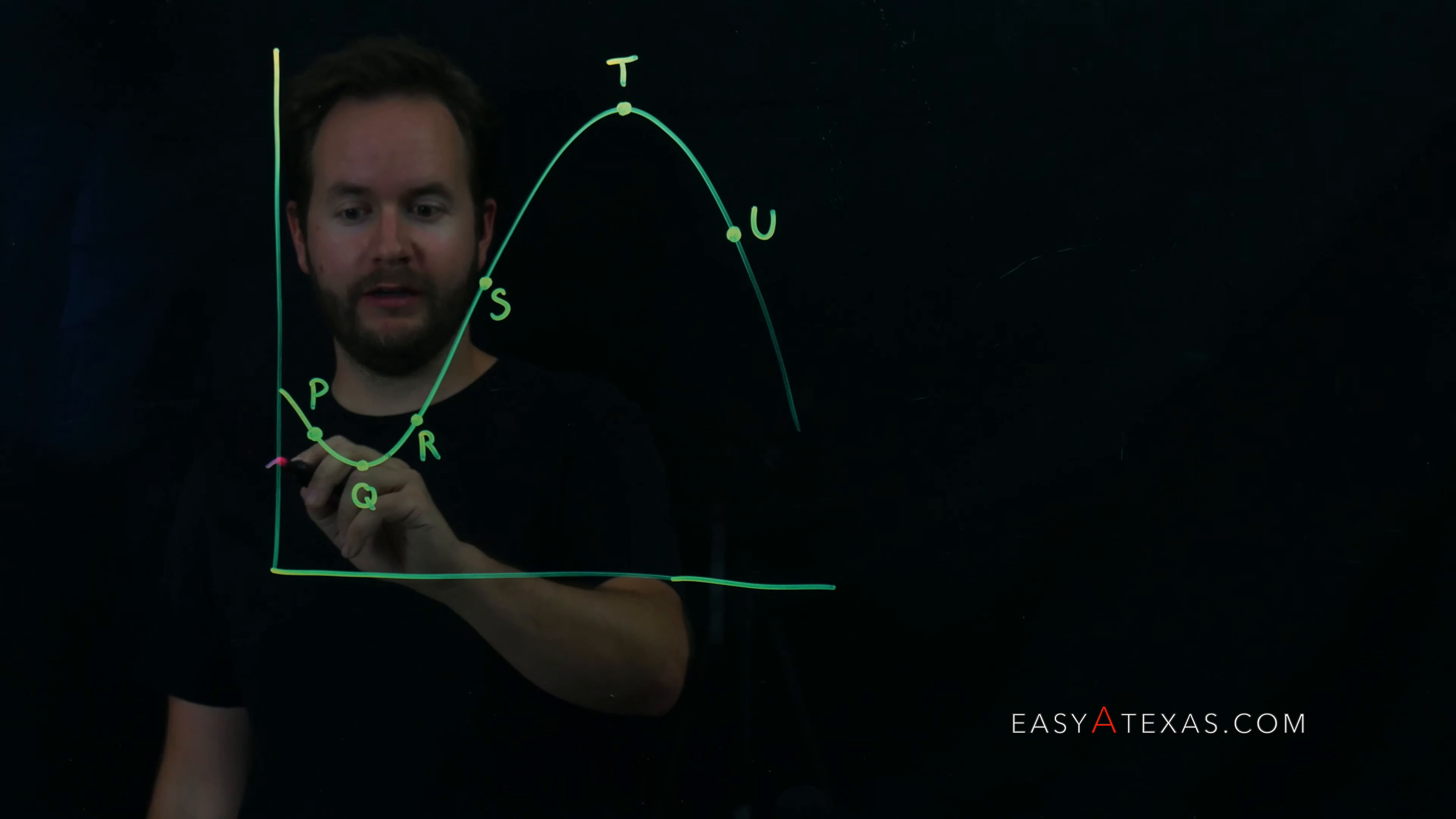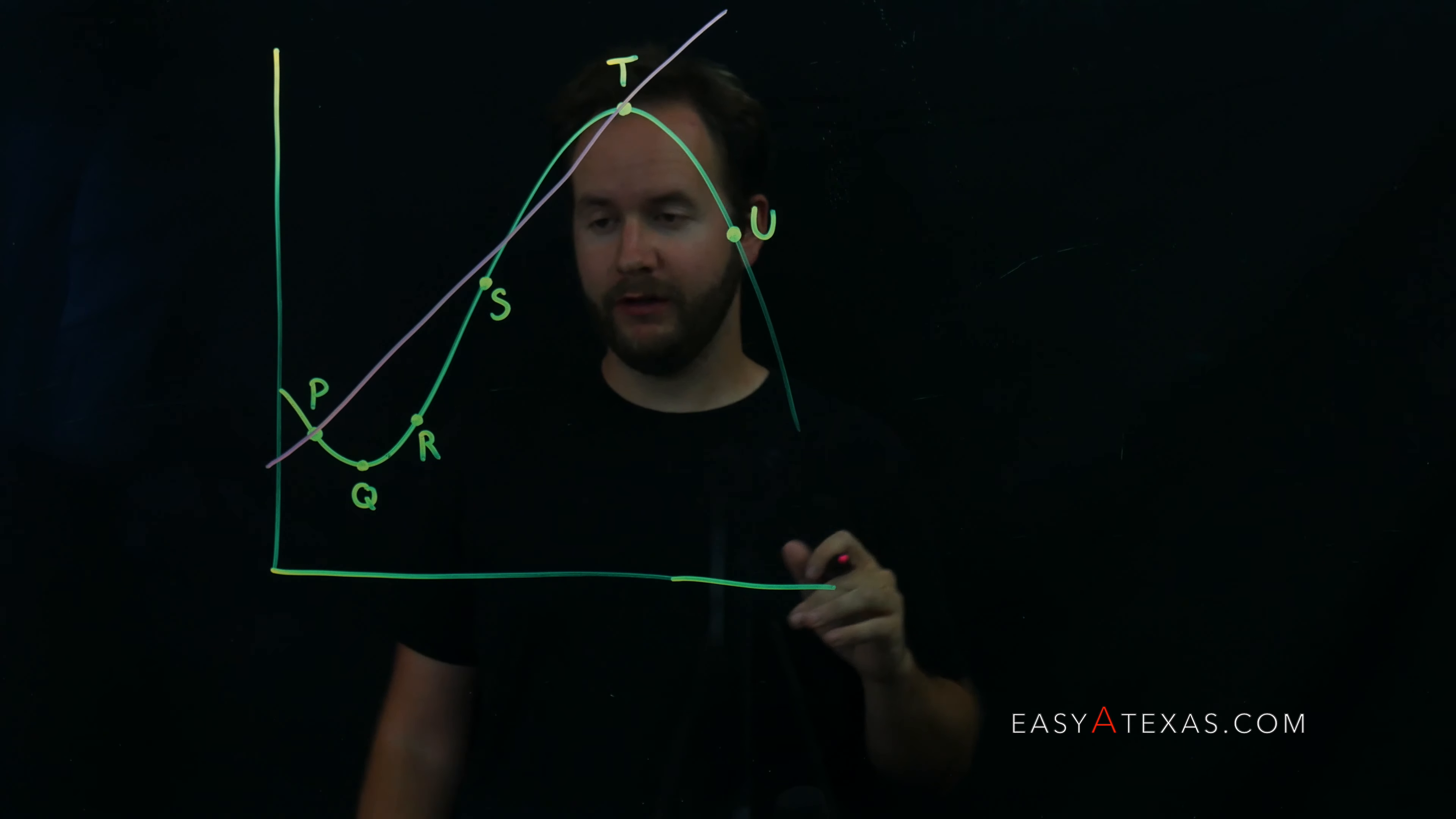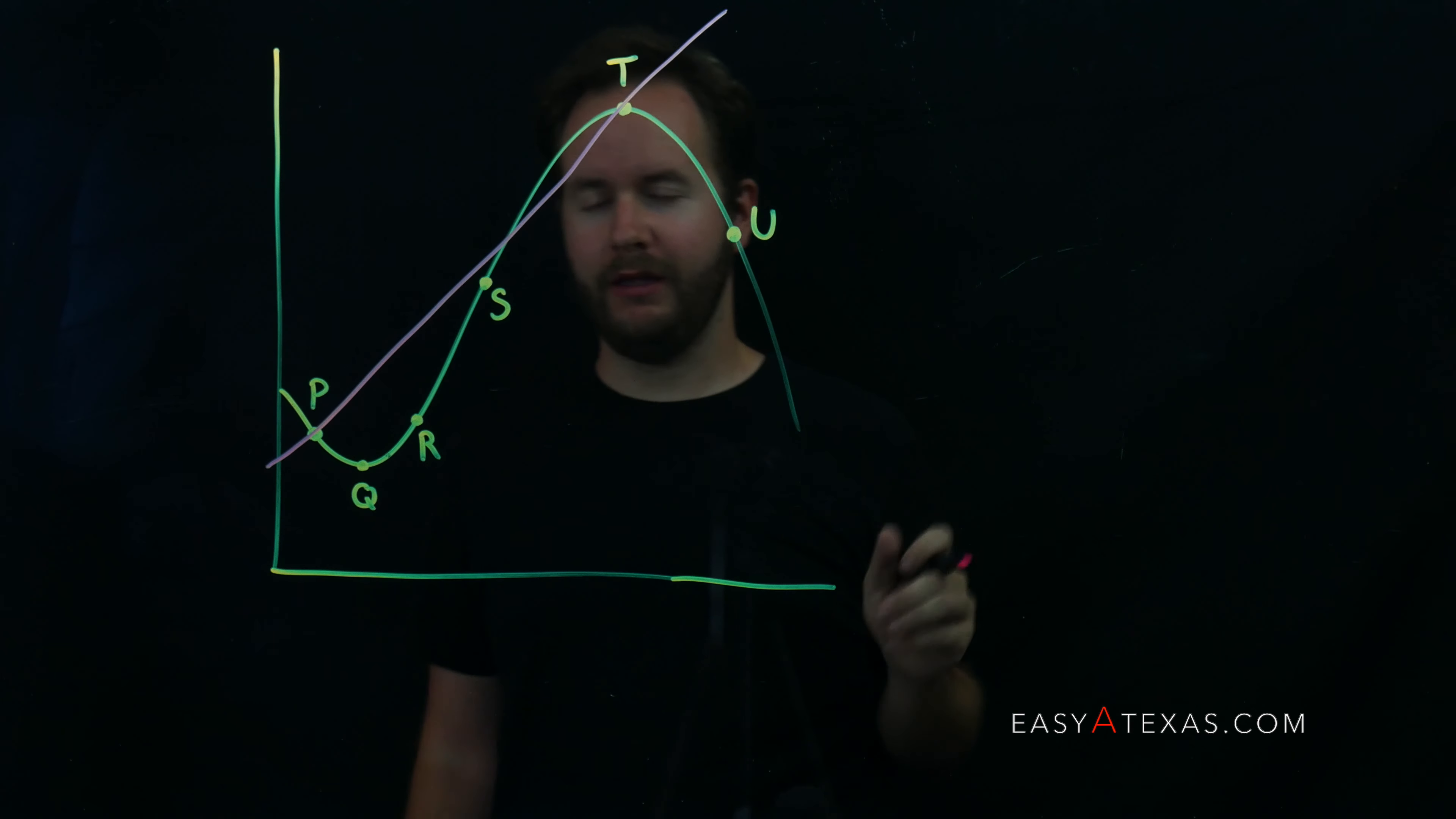Let's go ahead and draw that secant line connecting P and T. That's a rough sketch, it doesn't have to be perfect. So we've got our secant line connecting P and T,